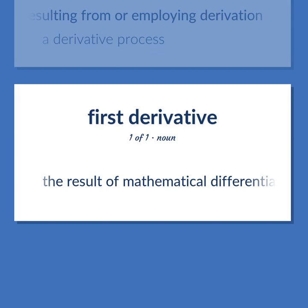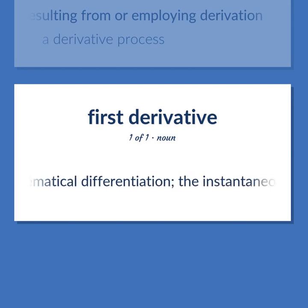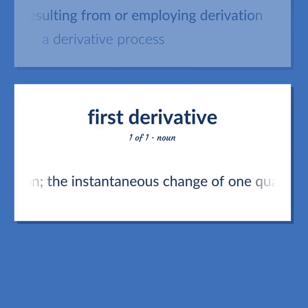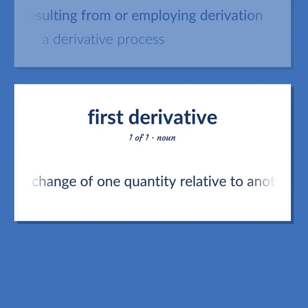Derivative — the result of mathematical differentiation; the instantaneous change of one quantity relative to another: Df(x)/dx.